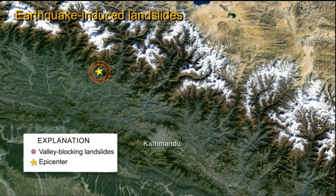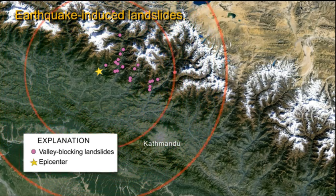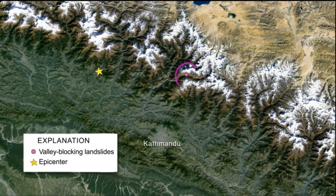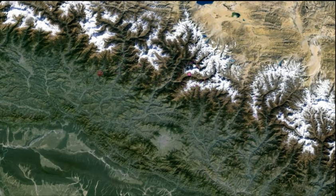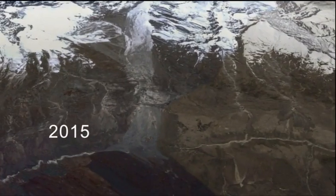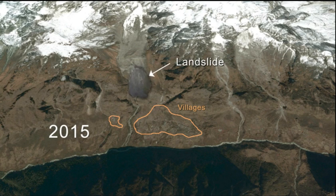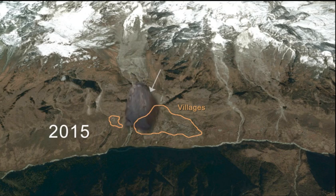Tens of thousands of landslides, ranging from small rock falls to fatal rock and ice debris avalanches, occurred during the ground shaking from the Gorkha earthquake and its aftershocks. The most deadly was the Langtang debris avalanche that slid as much as 1,500 meters downslope, then became airborne and plunged an additional 500 meters, burying the village below and killing 200 people.